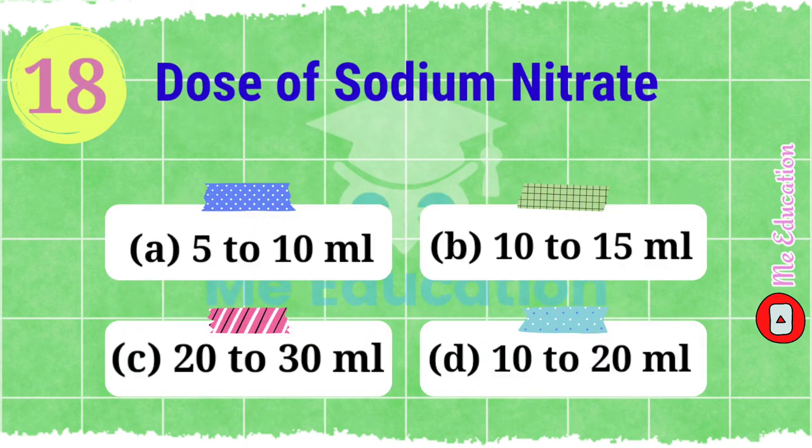Question number eighteen: what is the correct and actual dose of sodium nitrate? Options: 5 to 10 ml, 10 to 15 ml, 20 to 30 ml, 10 to 20 ml. The right answer is option B, 10 to 15 ml.